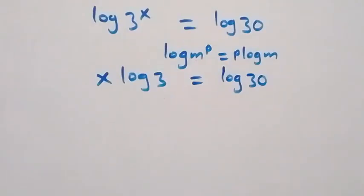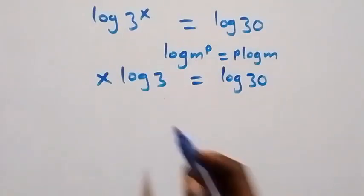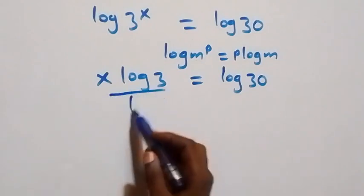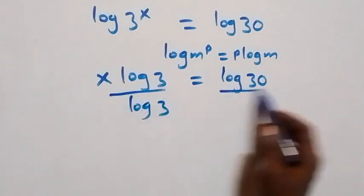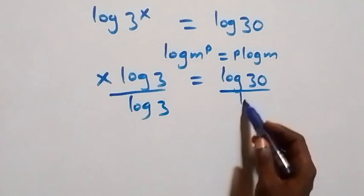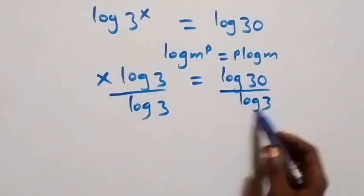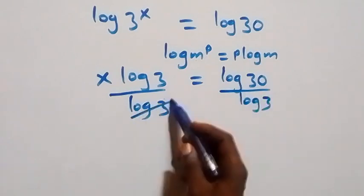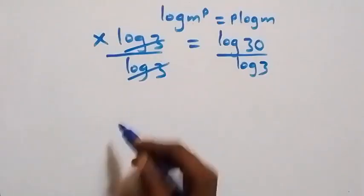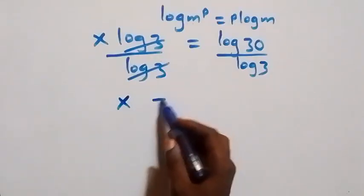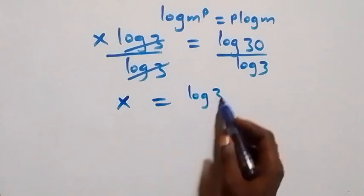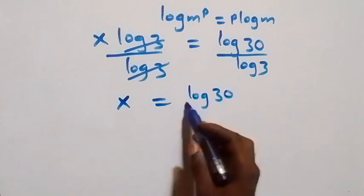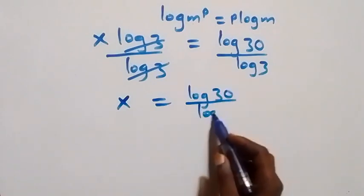Then from here we divide both sides by log 3 — divide this side by log 3 and also divide that side by log 3. Log 3 cancels, and we have x equals log 30 over log 3.